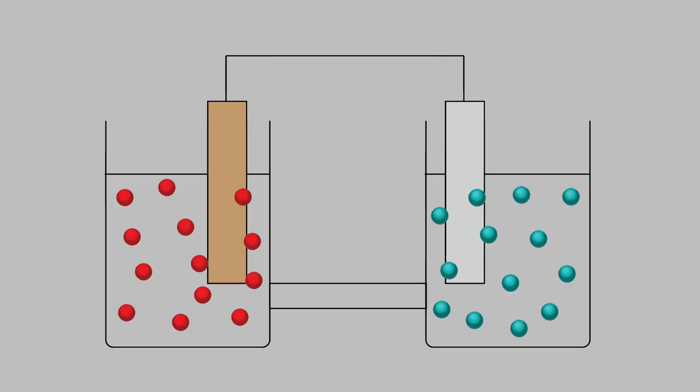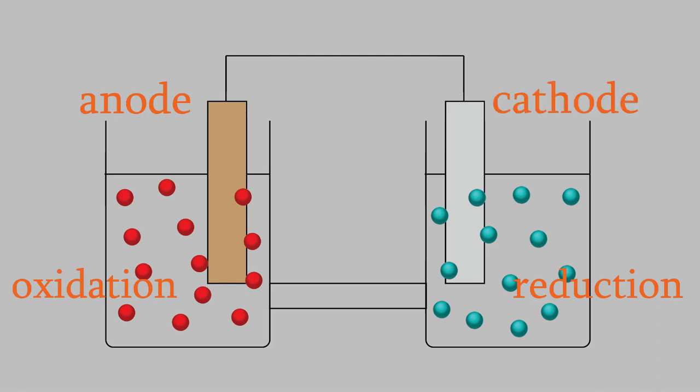As you might remember, in a voltaic cell the half-reactions in a redox reaction are physically separated, so the reactants and products of the oxidation reaction are separate from the reactants and products of the reduction reaction. Remember, the oxidation reaction happens at the anode and the reduction happens at the cathode. We set the reaction up this way so that the electrons produced by the oxidation must travel a distance in order to be taken up by the reduction reaction.